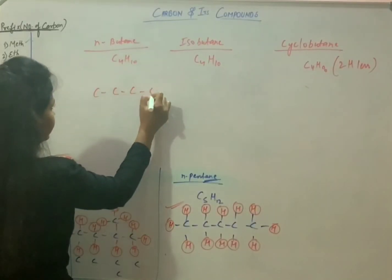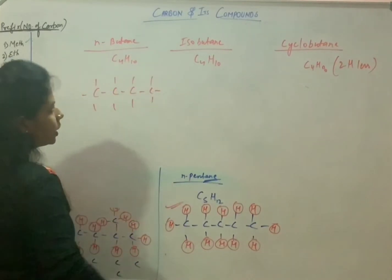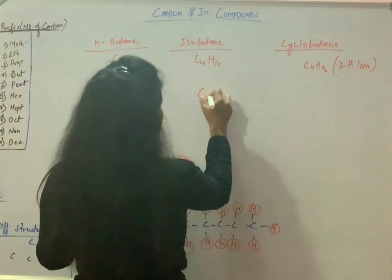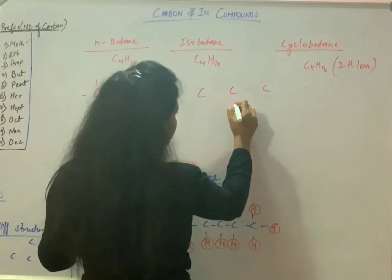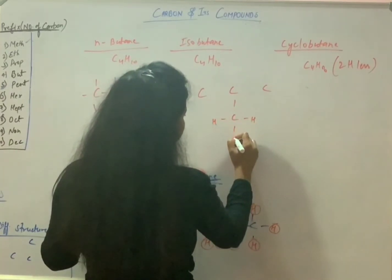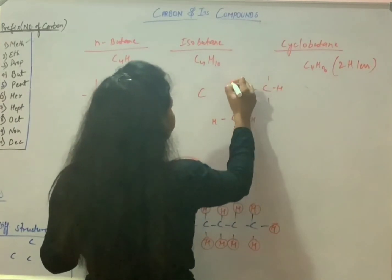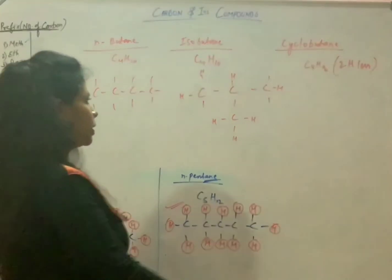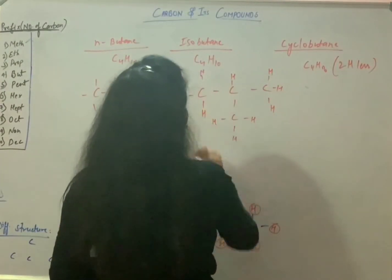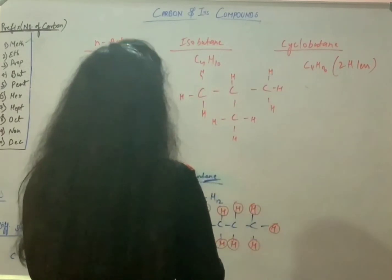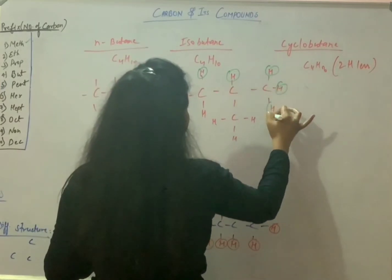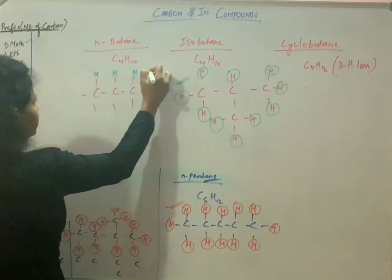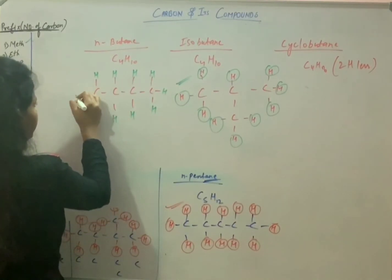For isobutane, one carbon is placed down or up from the second carbon. Counting hydrogens for isobutane: 10 hydrogens total. For normal butane, also 10 hydrogens total. For cyclobutane, the structure is in cyclic form with single bonds, and there are 8 hydrogens — consistent with the formula C4H8.